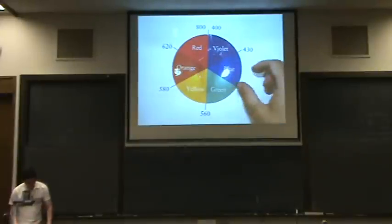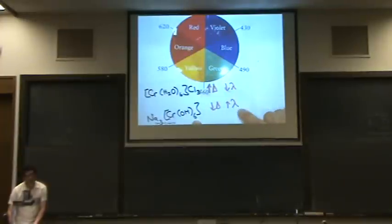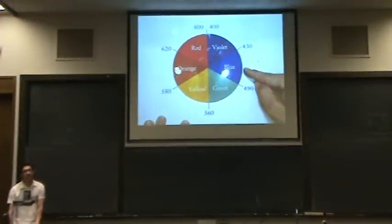So, lambda increases. Remember lambda. Here's a low, here's high. So lambda is increasing for the second one. So let's go to the higher lambda. It's blue.